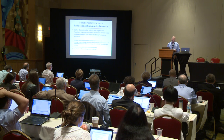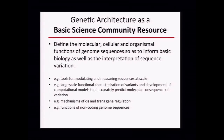The group had a particular fondness for creating resources for the basic science community. The pendulum is swinging in NHGRI and probably NIH toward being more translational, and I think it's the right time to do that. But we can't forget that by doing this translational research, we'll create resources for the basic sciences. In this context, we'll define the molecular, cellular, and organismal function of genome sequences so as to inform basic biology as to the interpretation of sequence variation. If we accomplish this, it will open many doors for the basic sciences — tools for modulating and measuring sequences at scale, large-scale functional characterization of variants, and development of computational models that accurately predict molecular consequences of that variation. We can understand better the mechanisms of cis and trans gene regulation and also the functions of non-coding genomic sequences, which really is our next frontier.